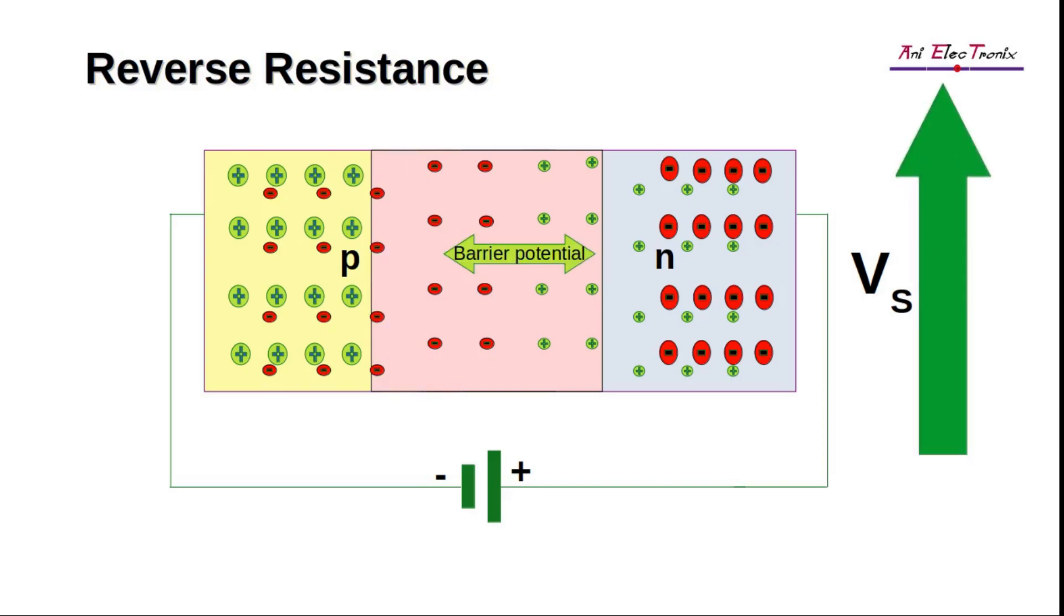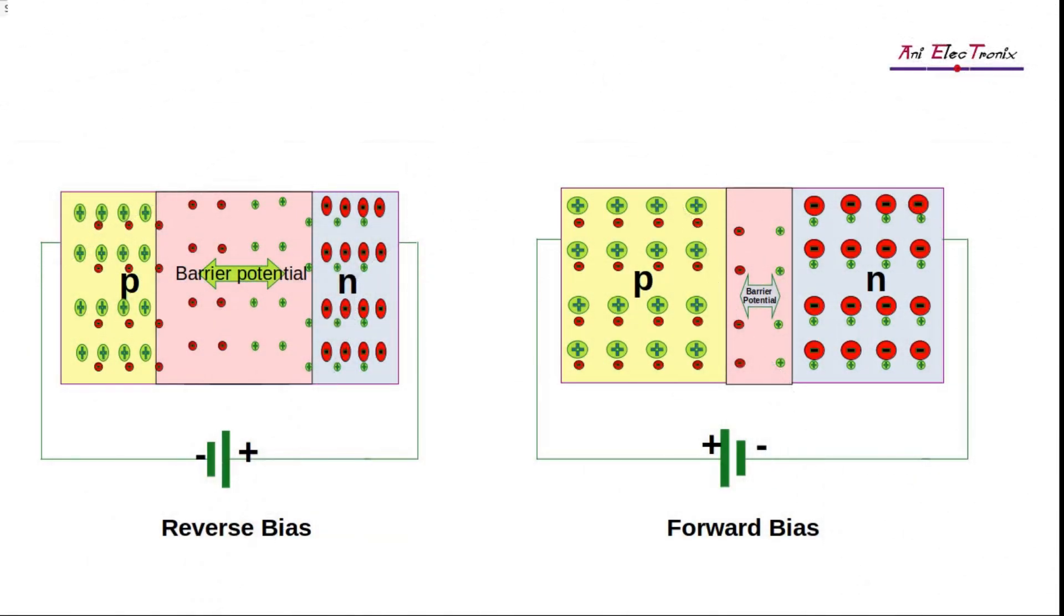Therefore, a reverse biased P-N junction diode offers an extremely high resistance to the electric current. By comparison, the reverse resistance ranges in the mega-ohm range compared to forward resistance.